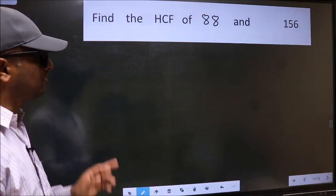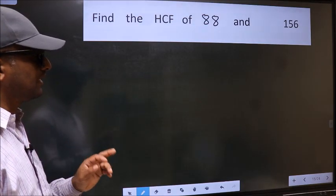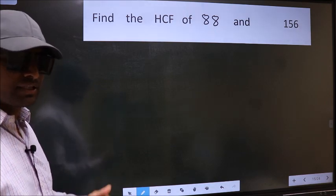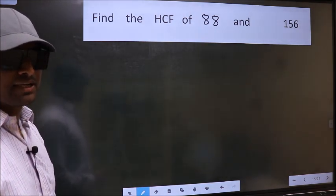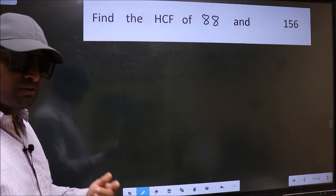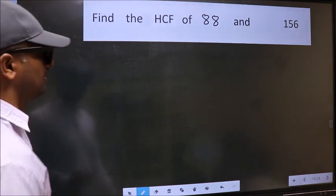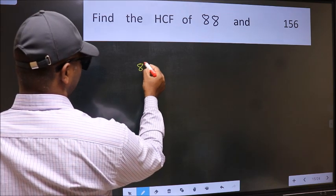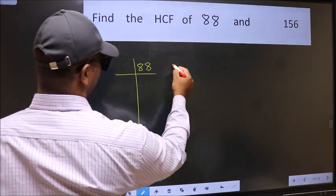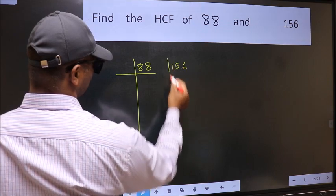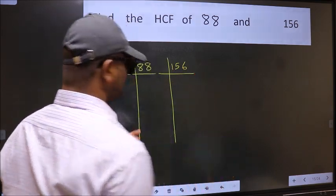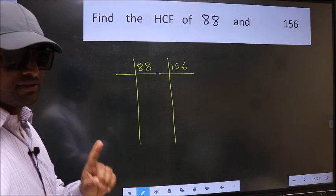Find the HCF of 88 and 156. To find the HCF, we should do the prime factorization of each number separately — 88 and 156. This is step 1.